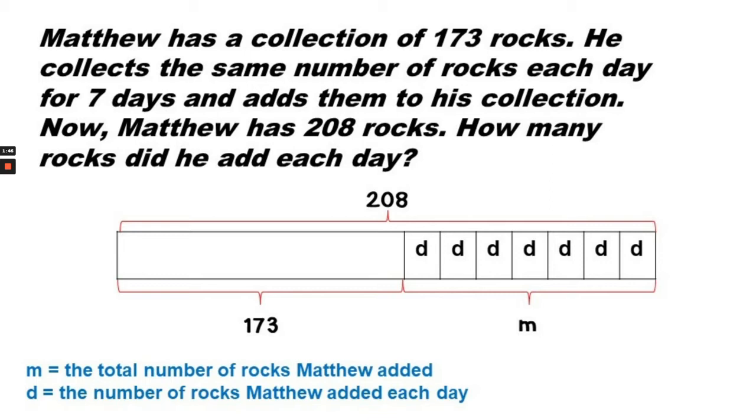M is the total number of rocks that Matthew added, and D equals the number of rocks Matthew added each day. So first we need to solve for M, and then divide it by seven to find D.